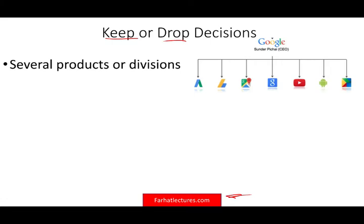So when do we have to use keep or drop decisions in the real world? Most companies don't produce only one product — they will produce many products and they might have many divisions. A case in point is Google. When you think of Google, you think of Google Search, but Google has other divisions such as YouTube, Google Maps, Google Ads, and Google Android.